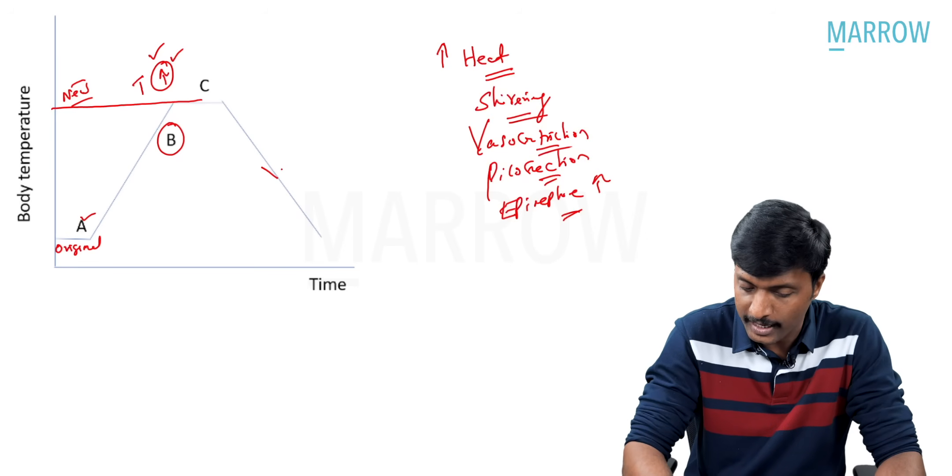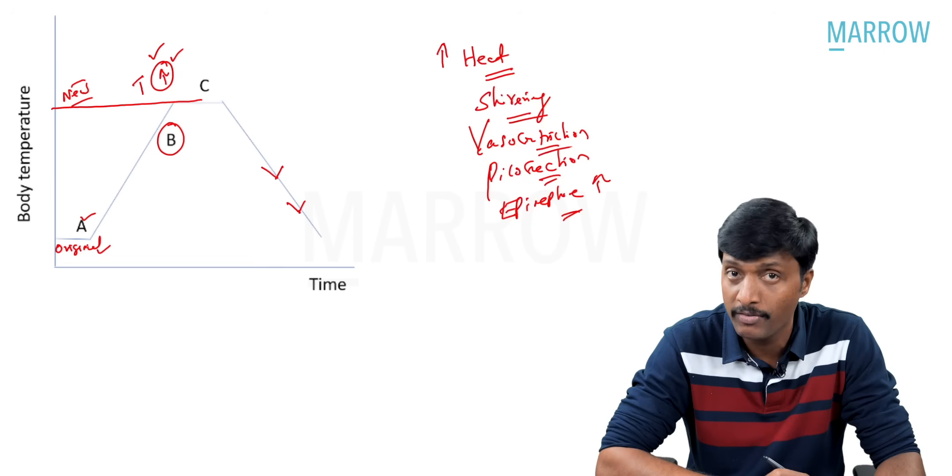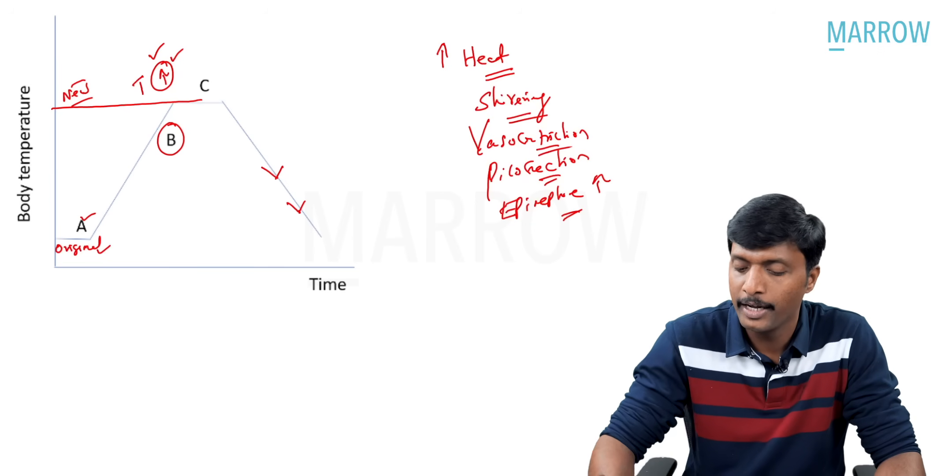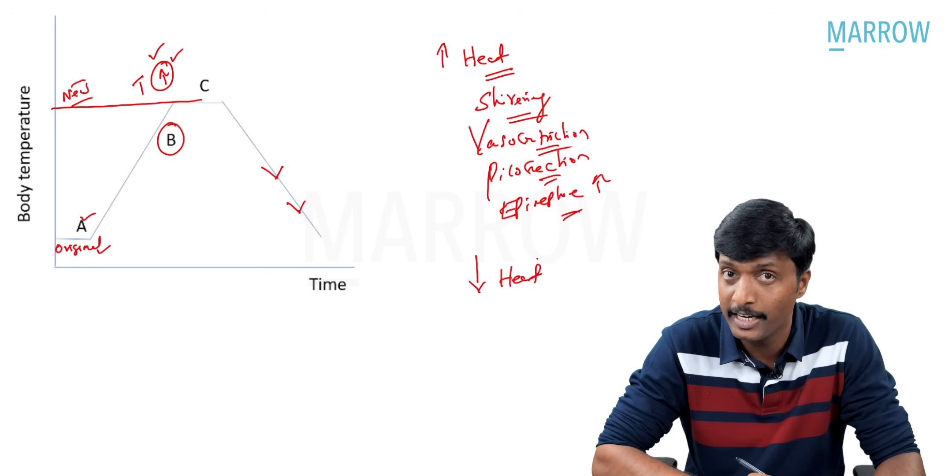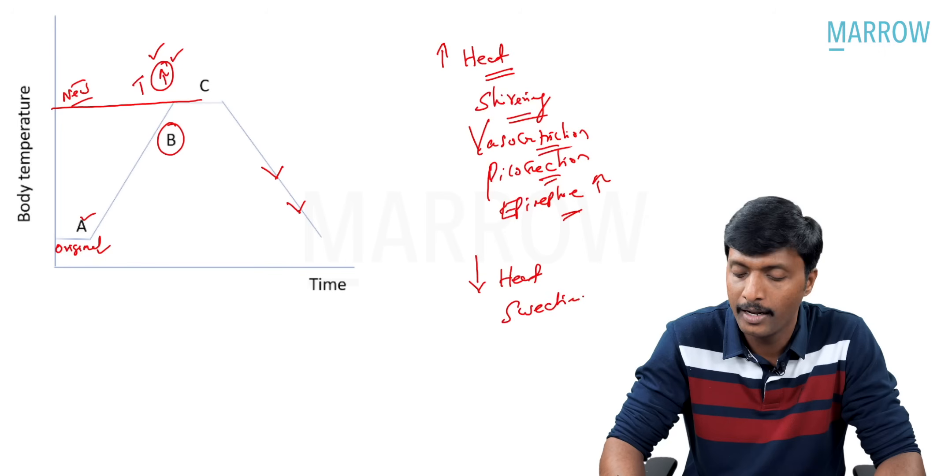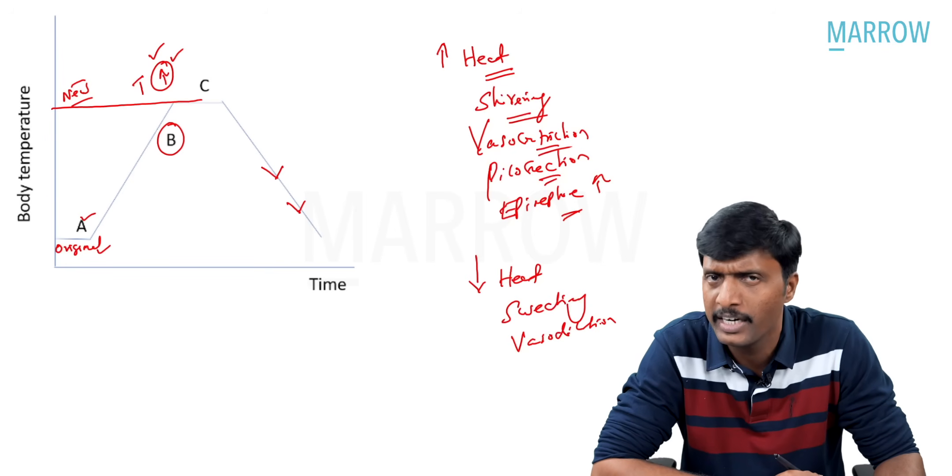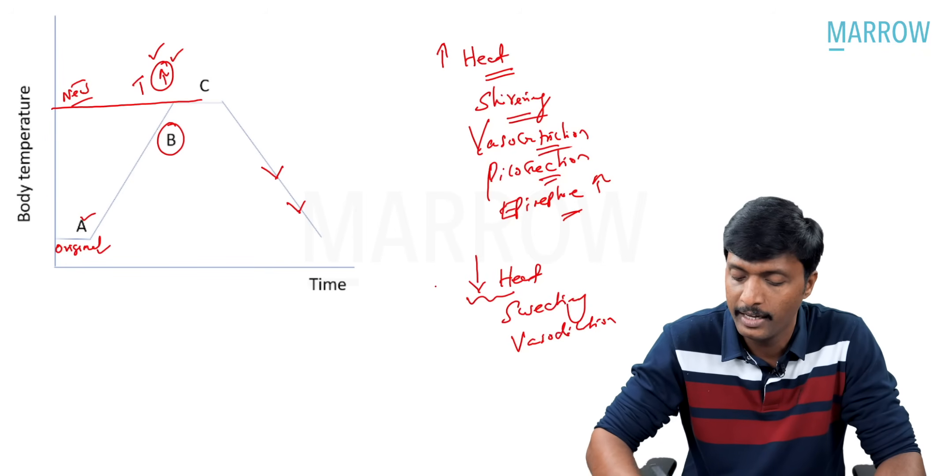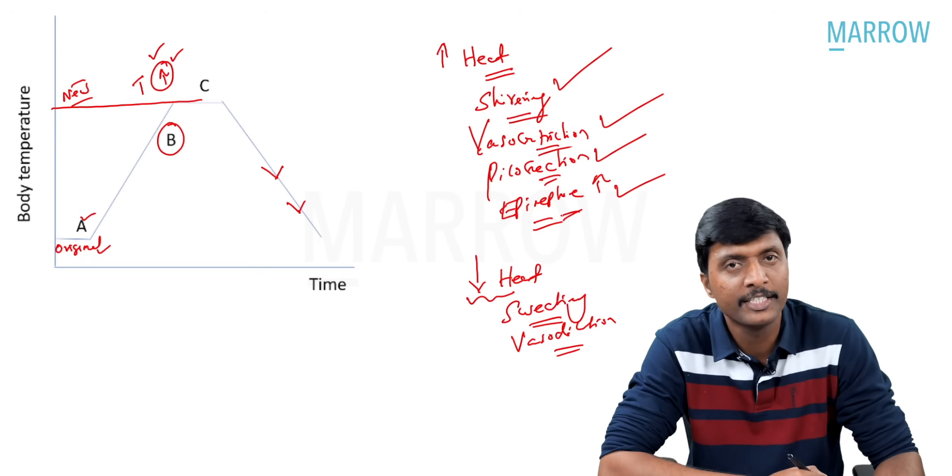If you want to reduce that, if you want to bring it back to the original value, what should be done? To decrease heat, to dissipate heat, you need to do sweating. You need to do vasodilation. This is not asked in question. This is for understanding. To decrease body heat, there is sweating, vasodilation. To increase heat, shivering, vasoconstriction, piloerection, and epinephrine secretion increases.